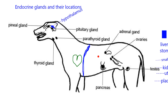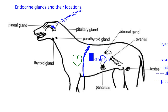Moving to the abdominal cavity, I want to name the stomach — it's an endocrine tissue. Then we have the liver, which I'm portraying as a block here. The liver is endocrine tissue. Of course, you realize most of these tissues have multiple functions.